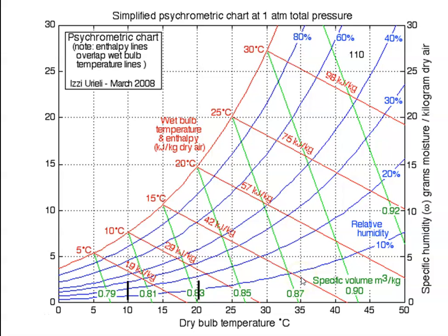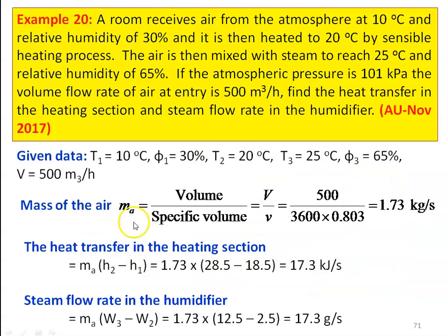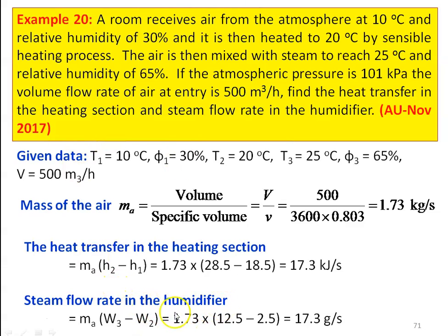Mass of air equal to volume divided by specific volume equal to 500 divided by (3600 × 0.803) equal to 0.173 kilograms per second. Heat transfer in the heating section equal to Ma × (H2 minus H1) equal to 0.173 × (28.5 minus 18.5) equal to 1.73 kilojoules per second. The steam flow rate in the humidifier equal to Ma × (W3 minus W2) equal to 0.173 × (12.5 minus 2.5) equal to 1.73 grams per second. These are the answers to the problem.